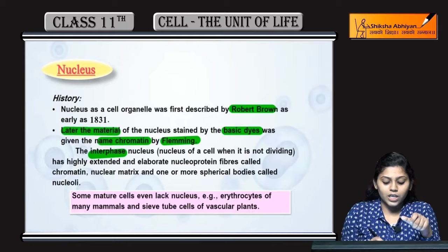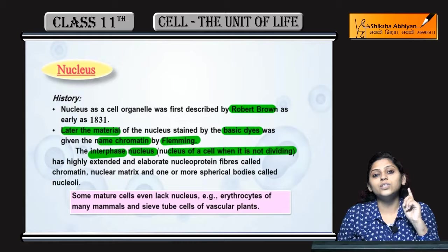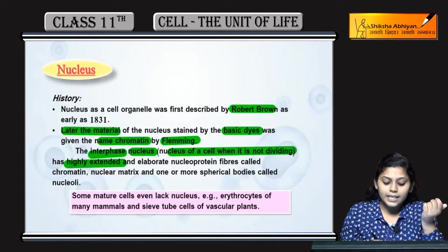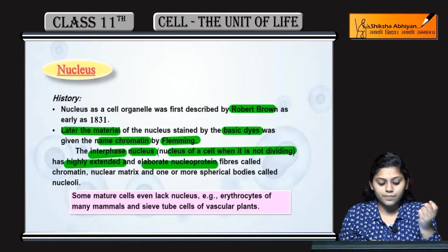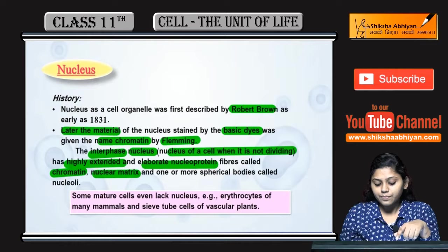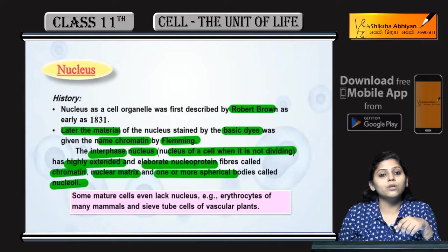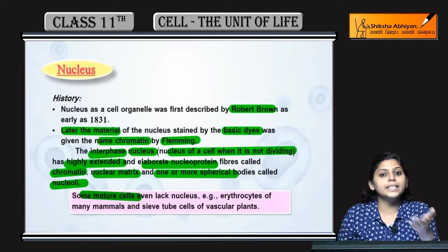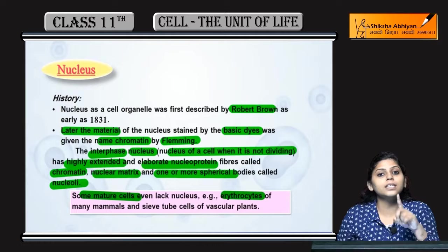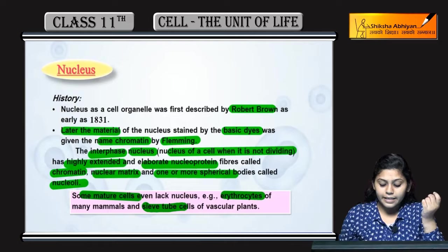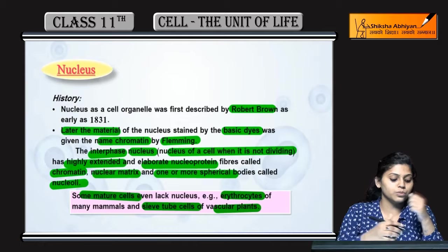Interphase me, jab cell division nahi ho raha, nucleus ko study kiya — nucleus of cell when it is not dividing. Dekha highly extended and elaborate nucleo-protein fibers jinhe chromatin kaha tha Fleming ne. Nuclear matrix hai. One or more spherical bodies present hain jinhe nucleoli kaha. Kuch mature cells hain jinme nucleus present nahi hota, jaisi ki human ke RBC — adult erythrocyte aur mature RBCs me nucleus absent hota hai. Aur sieve tube cells of vascular plants mein bhi absent hota hai.